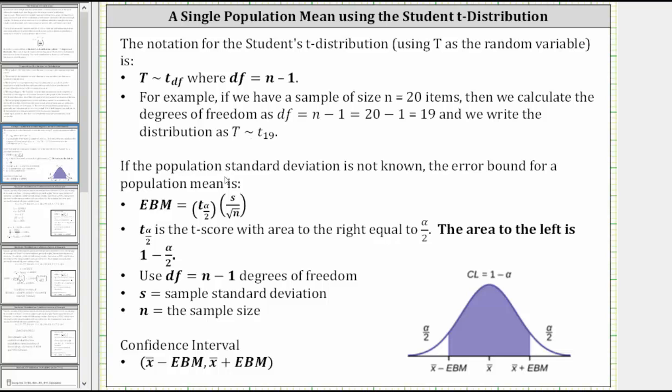If the population standard deviation is not known, the error bound for a population mean is EBM = t_{α/2}(s/√n), where t_{α/2} is the t-score with the area to the right equal to α/2, which means the area to the left is 1 - α/2. Use df = n - 1 degrees of freedom, s equals the sample standard deviation, and n is the sample size. The confidence interval is x̄ - EBM to x̄ + EBM.